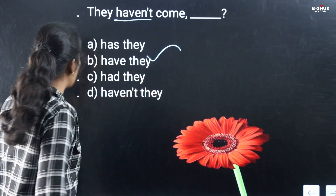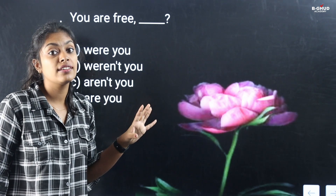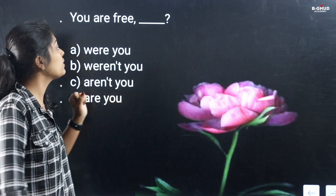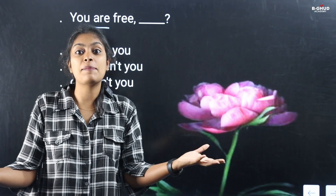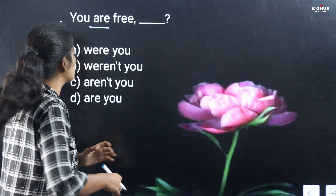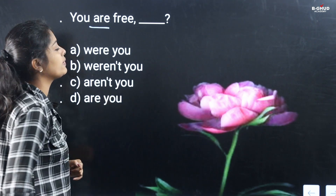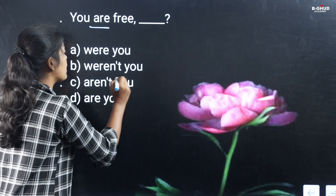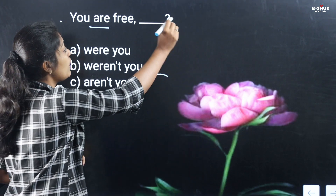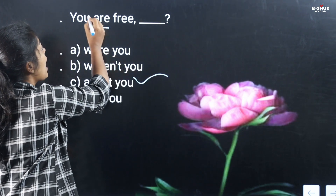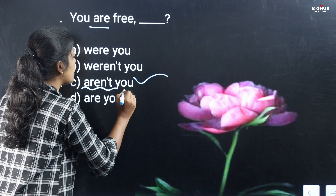Next example: 'You are free.' Is this positive or negative? Positive. So what is the question tag? Negative. The auxiliary verb is 'are', so the question tag is 'aren't you?' Because the sentence is positive, the question tag is negative — 'aren't you?' That is the correct answer.